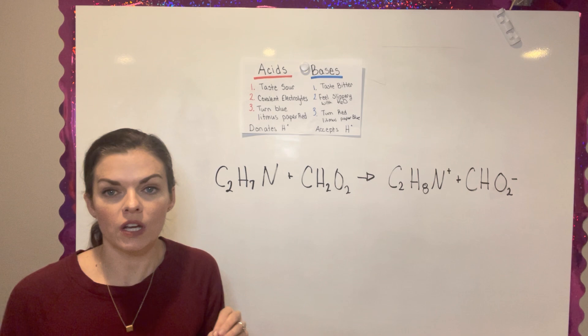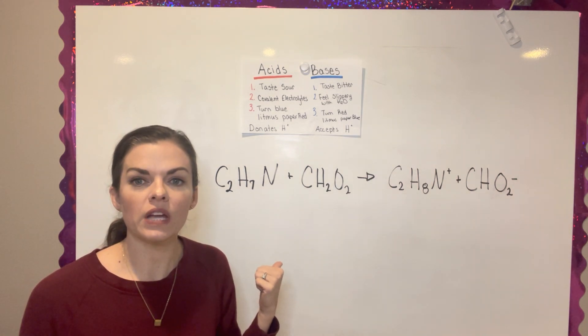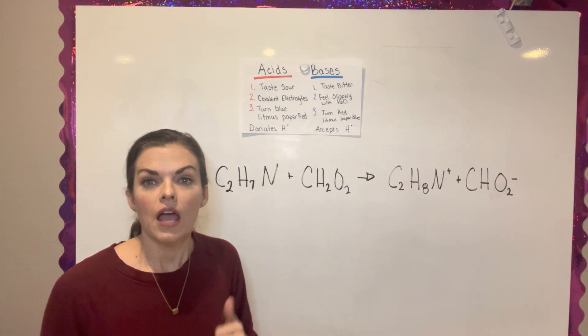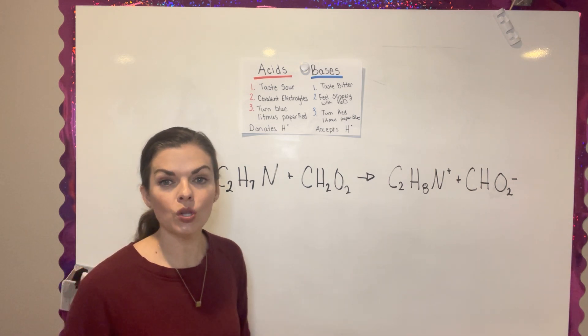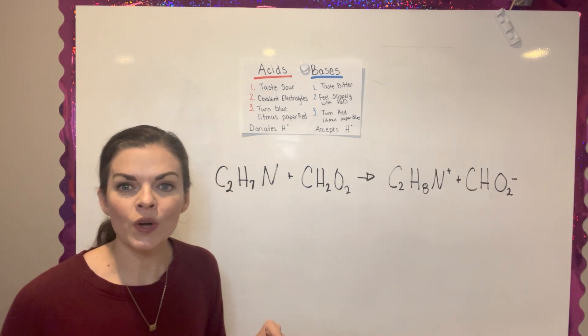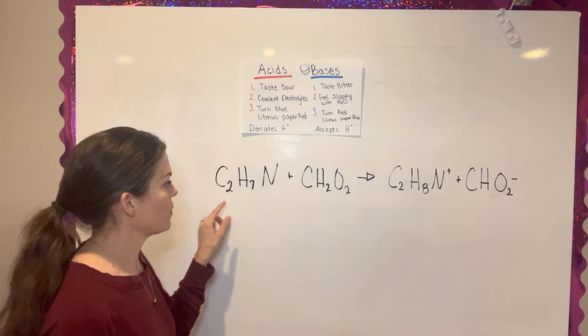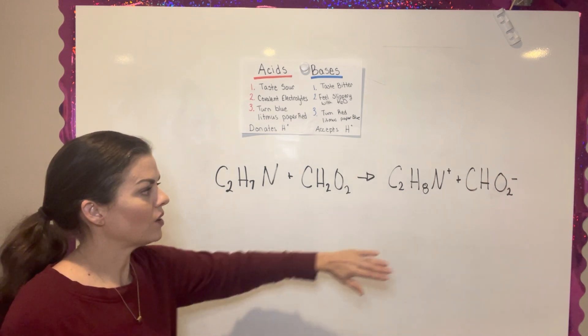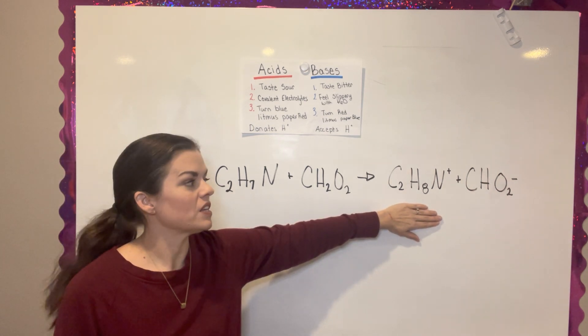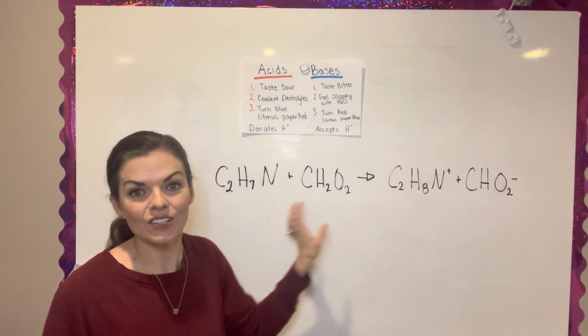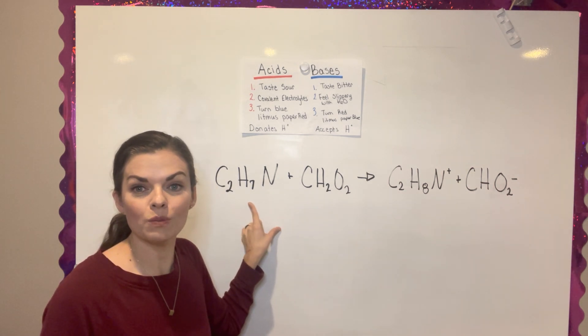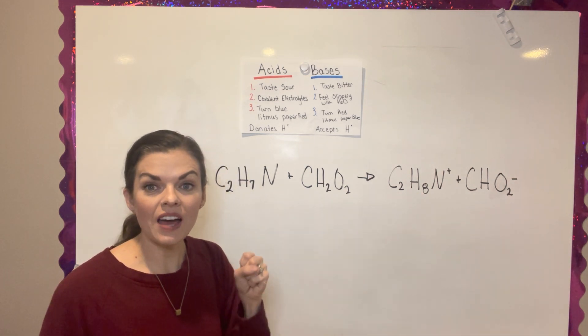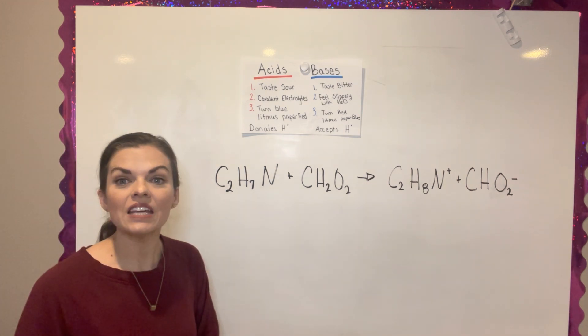For the comprehension check question number three, it gives you a chemical reaction and it asks you which reactant is an acid and which reactant is a base. I'm going to look for a compound that donates a hydrogen and one that accepts the hydrogen. If I take this first compound of C2H7N and I want to look and see what compound it turns into - it turns into C2H8N. If you'll notice, the H goes from an H7 to an H8. So it is actually accepting a hydrogen. So this compound then is my base.